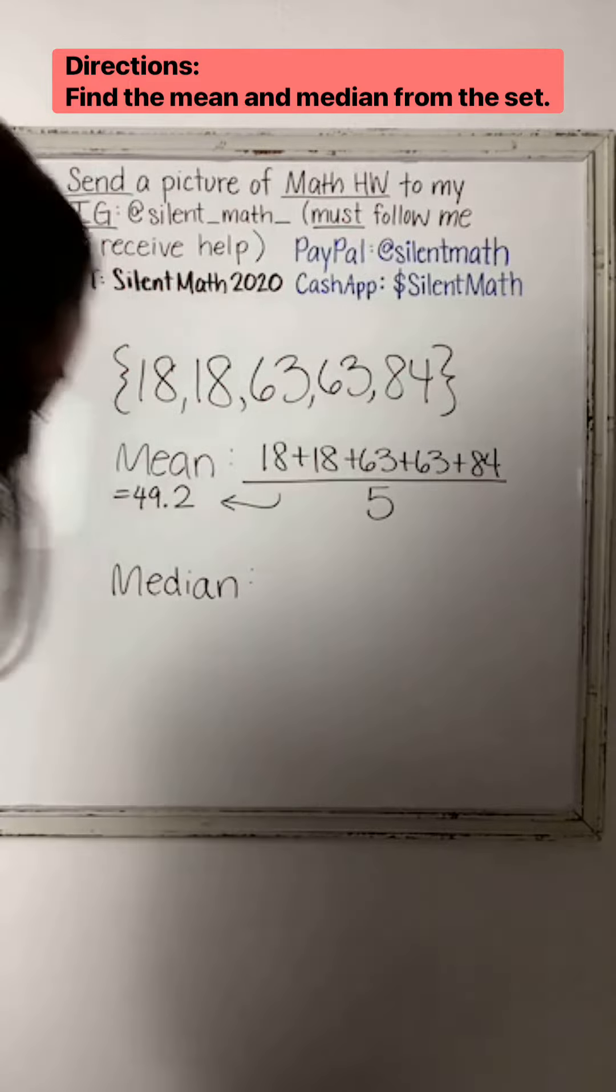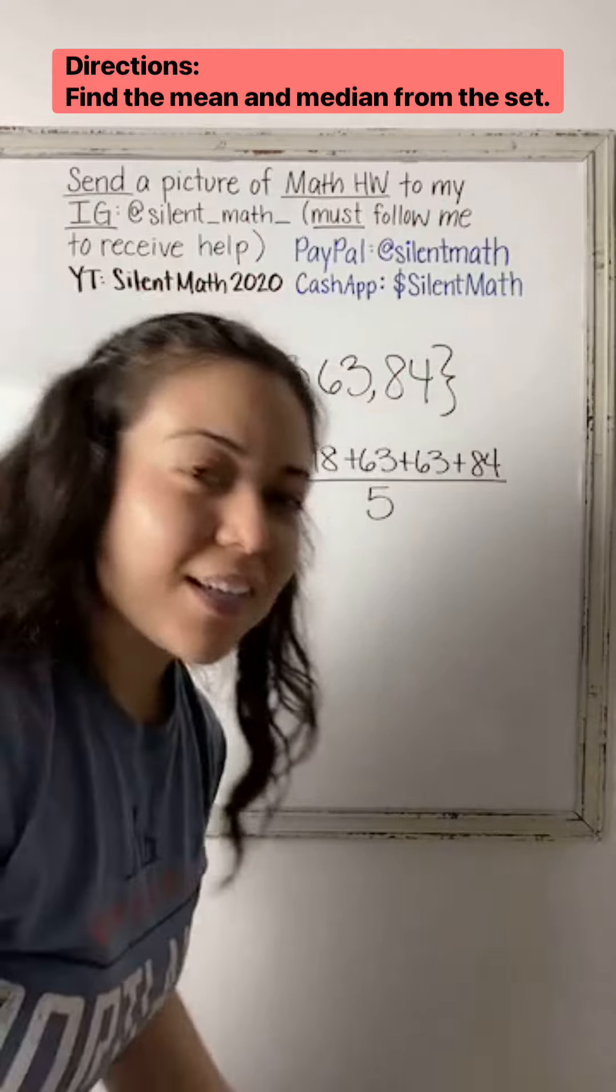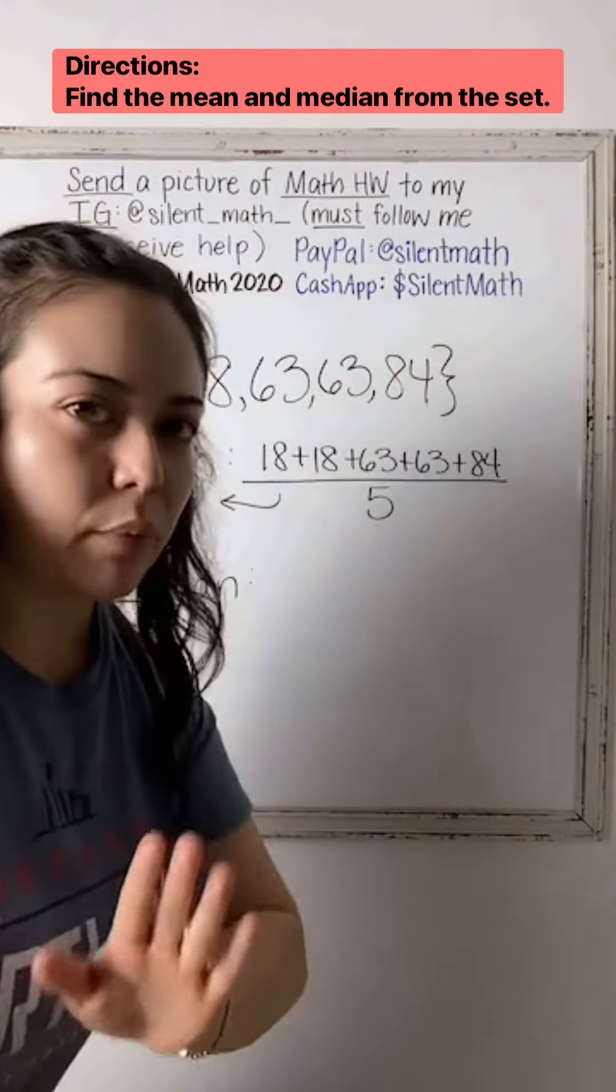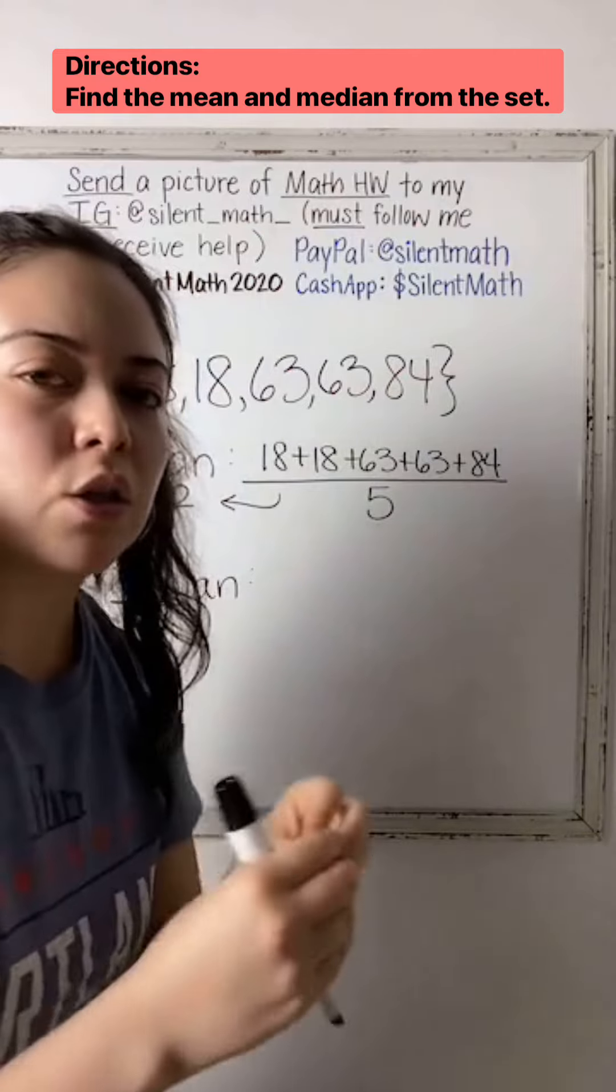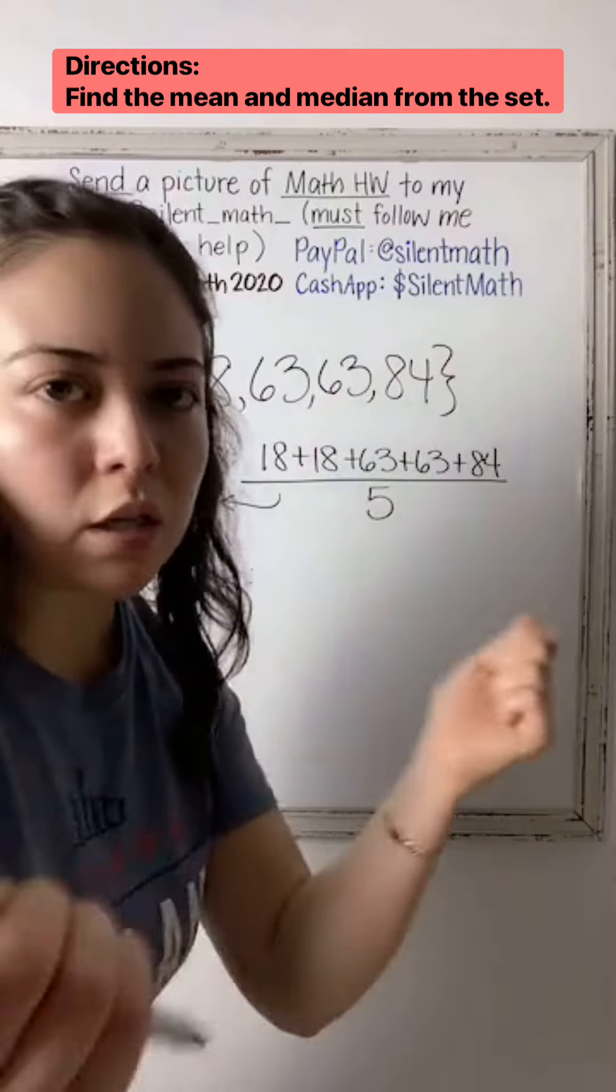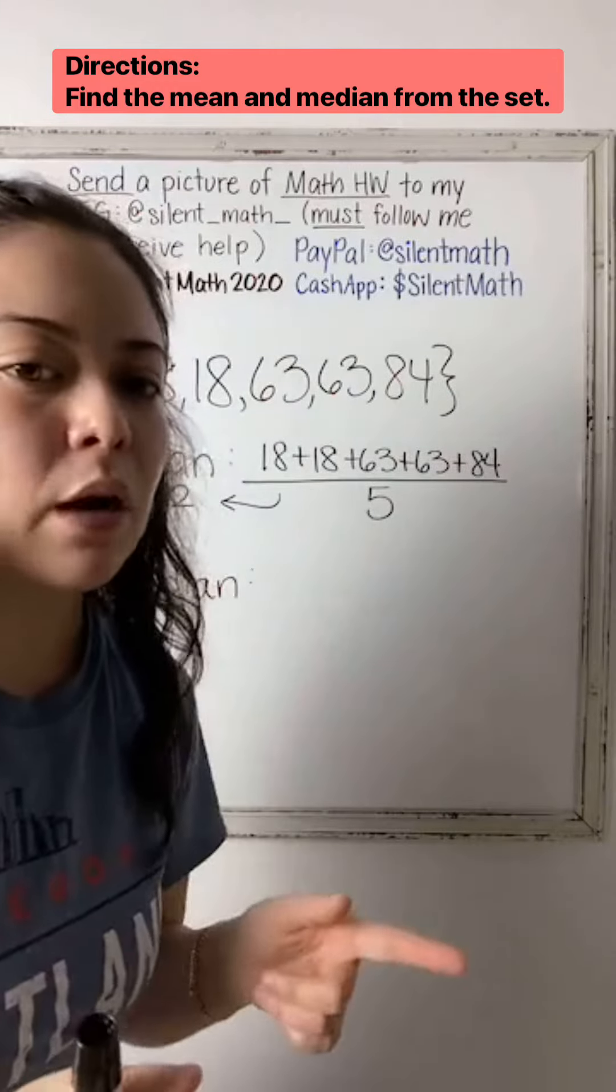Now median—doesn't that kind of sound like middle? So you have your set of numbers. This is the most important part: all your numbers need to go from least to greatest. Sometimes your values are going to be out of order, so it's your job to put them all in order and then figure out which one's in the middle.